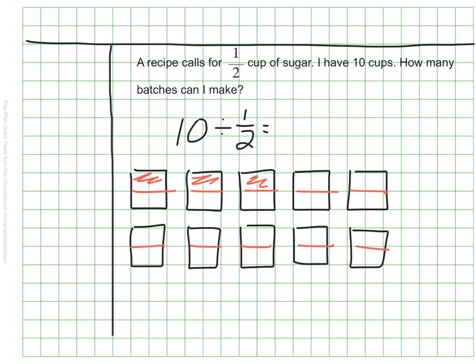So 1, 2, 3, 4, 5, 6, 7, 8, 9, 10, 11, 12, 13, 14, 15, 16, 17, 18, 19, and 20. I can make 20 batches because my quotient was 20. There are 20 groups, 20 halves in my 10 wholes.